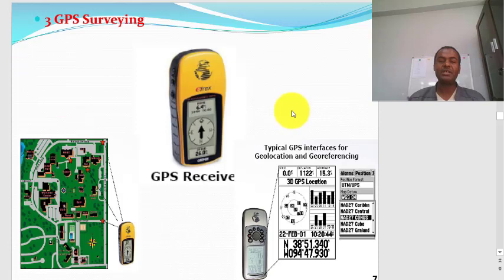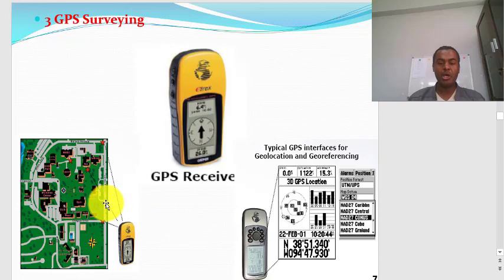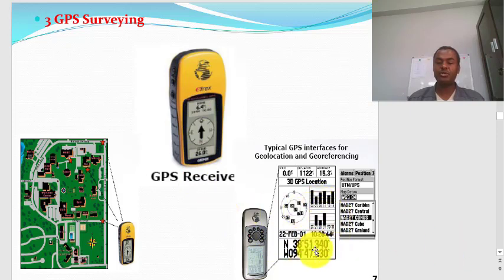The third vector data acquisition technique is GPS survey. GPS stands for Global Positioning System — it is a handheld device used to collect location information and elevation information. A number of satellites revolving around the Earth are used to locate a certain position using this device. Before collecting your data, you need to set up the coordinate system of the device.